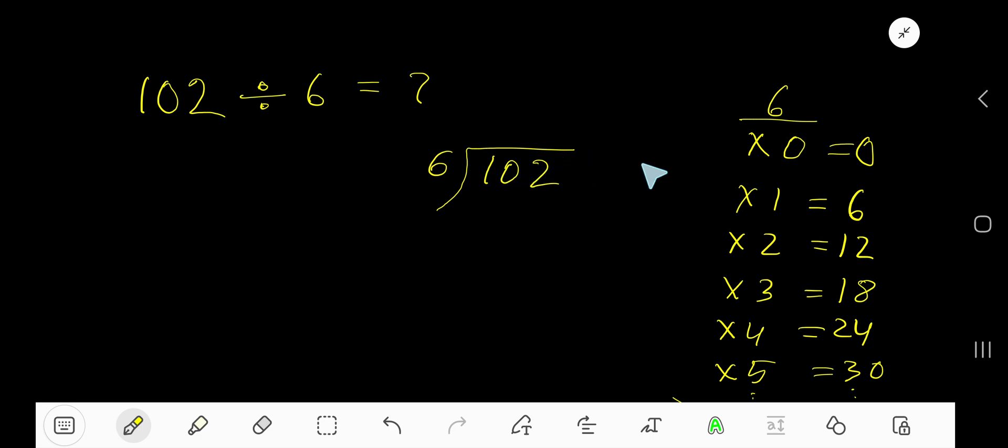To find out the multiplication table of 6, just add 6 with the previous step: 0 plus 6 is 6, 6 plus 6 is 12, 12 plus 6 is 18, 18 plus 6 is 24, 24 plus 6 is 30, like this.